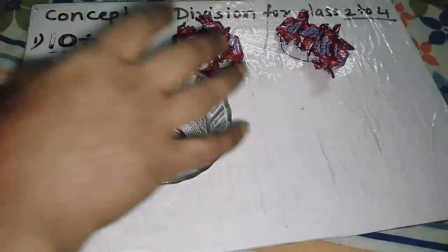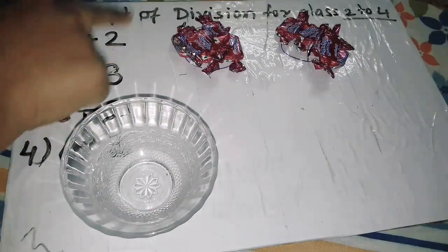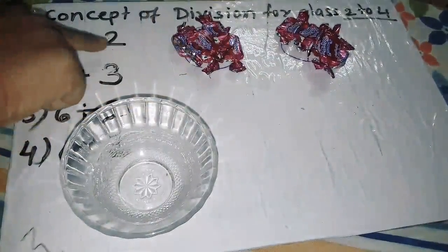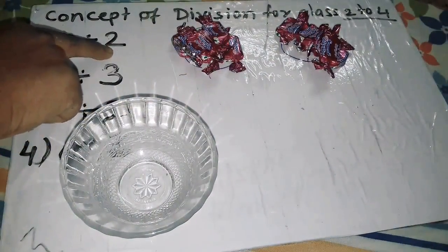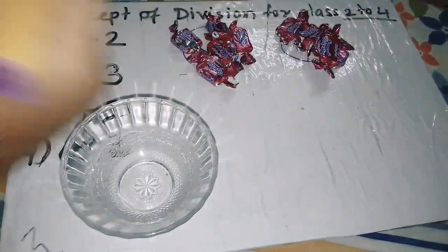What will be the answer of 10 divided by 2? I have 10 chocolates and they are distributed between two friends, and each friend will get 5 chocolates. So the answer will be 5.